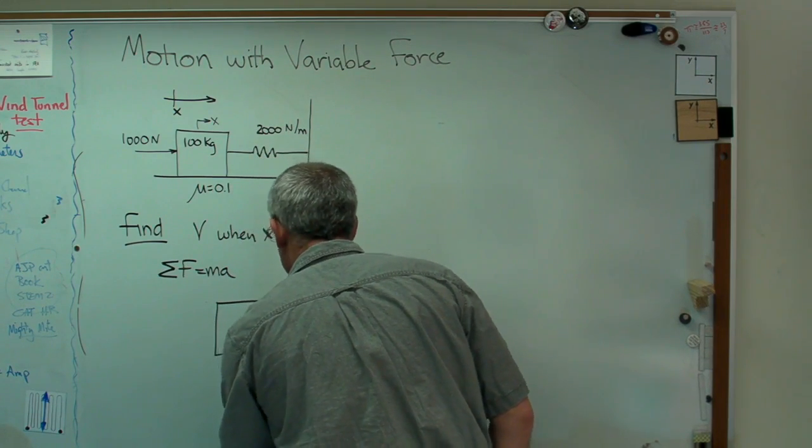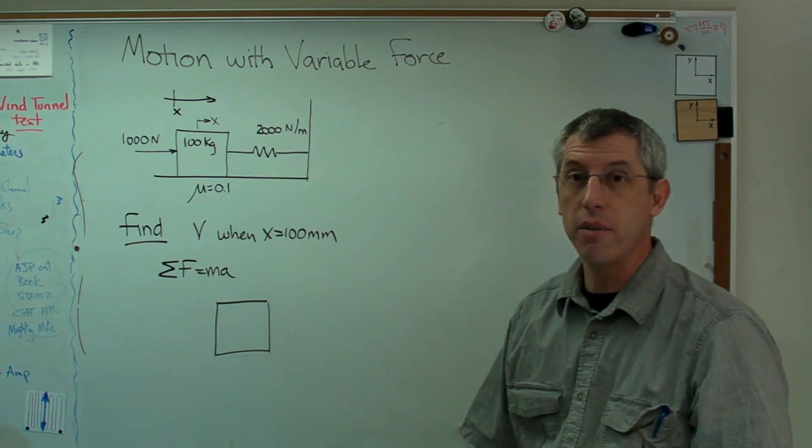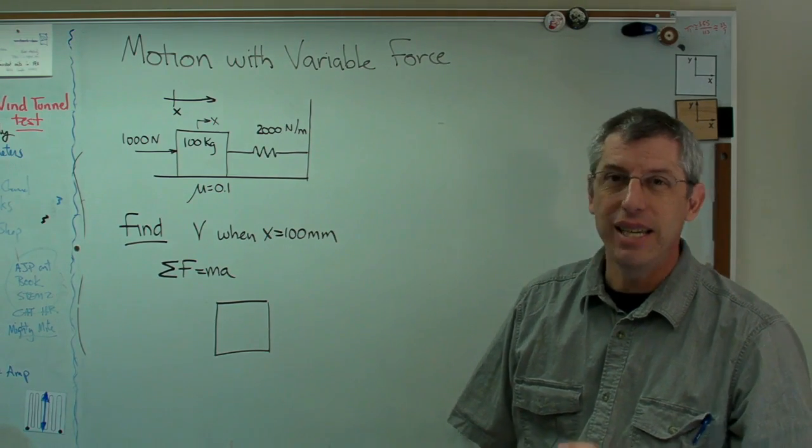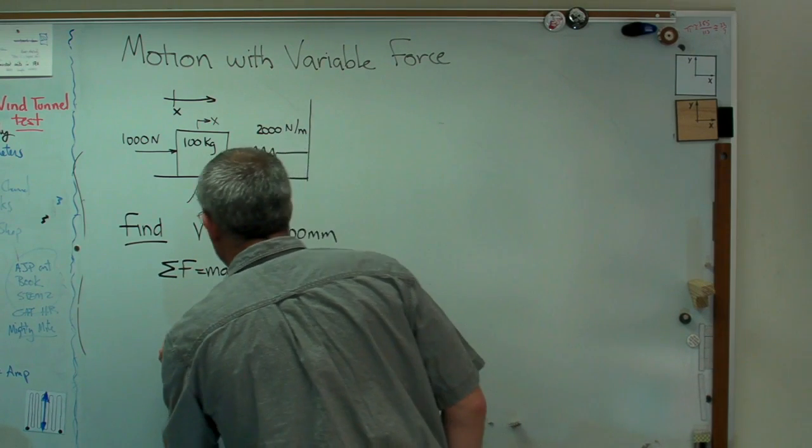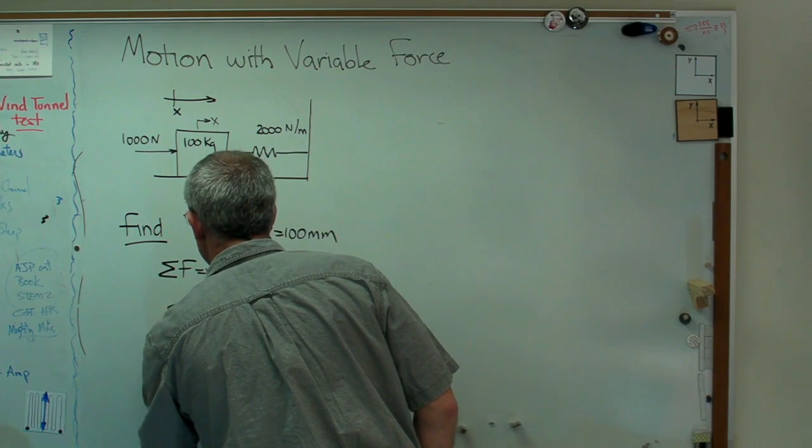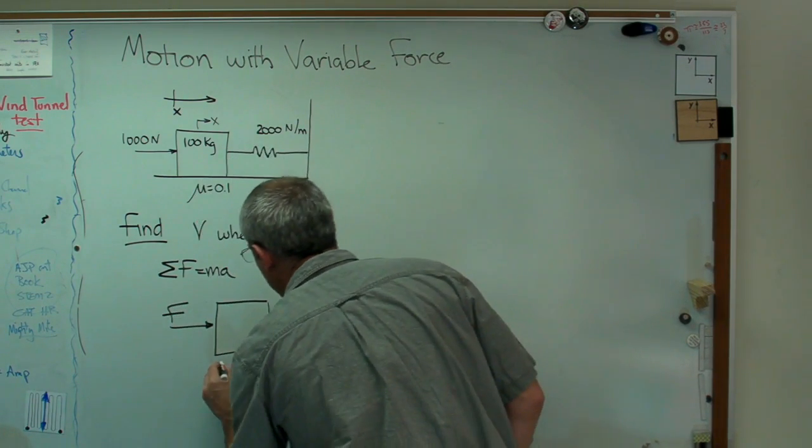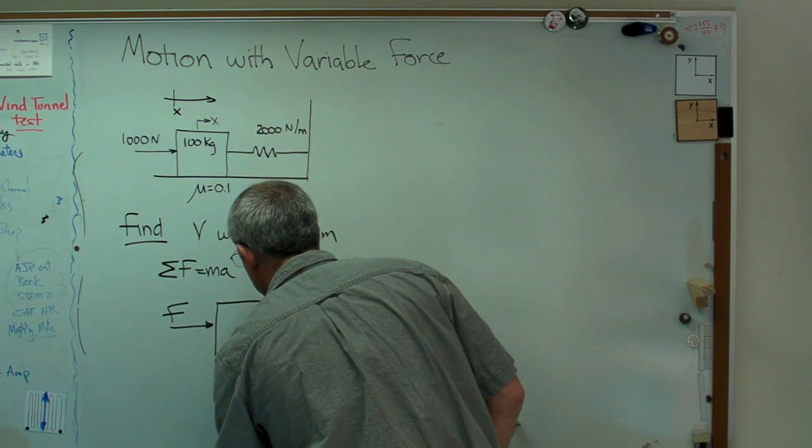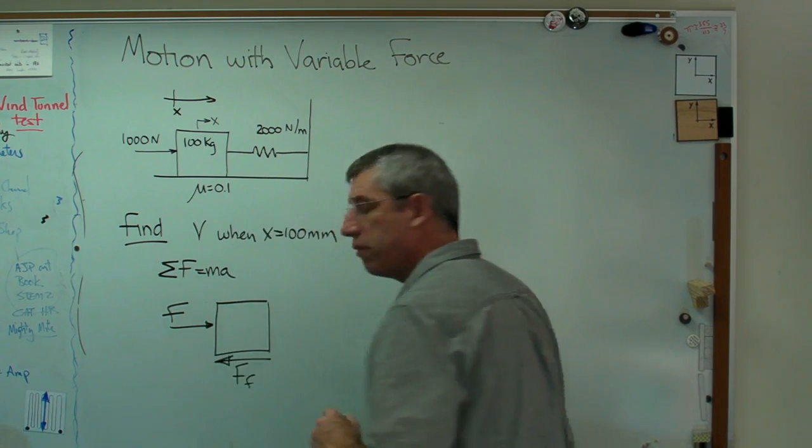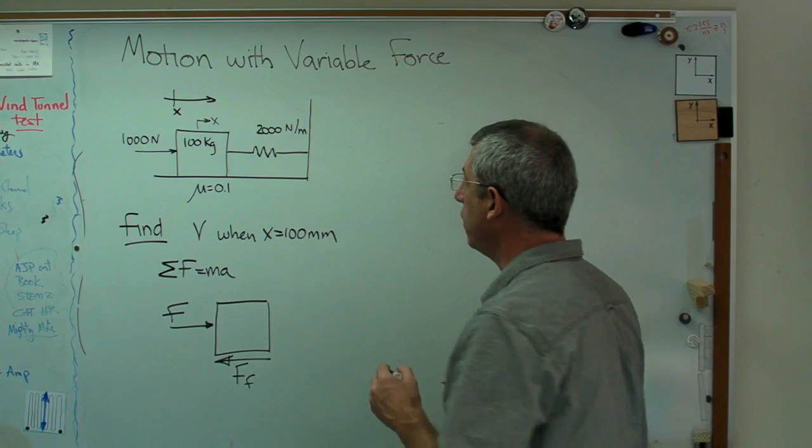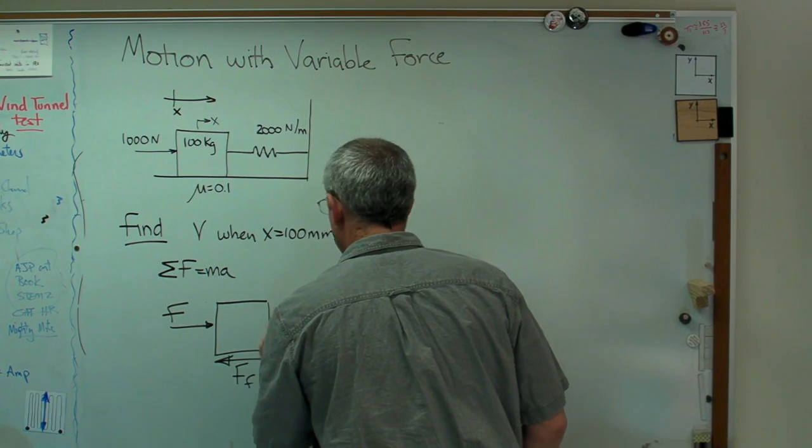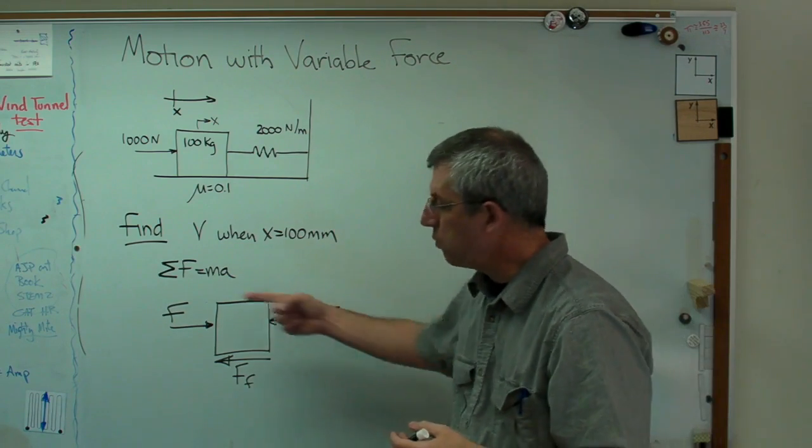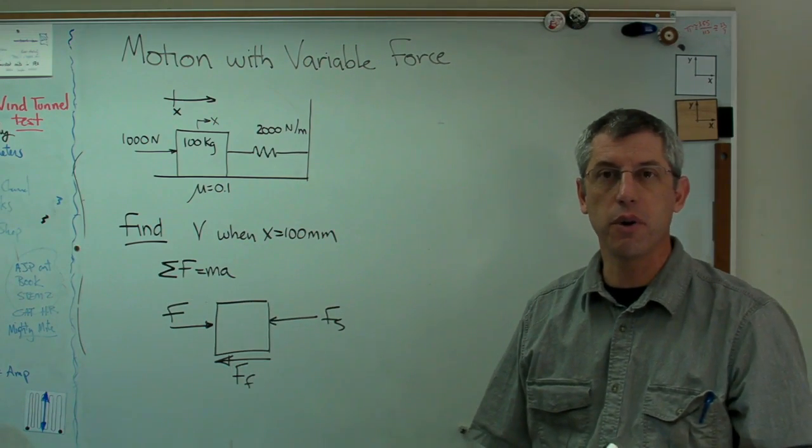When you're solving a problem, if you're not drawing a diagram, if you're not drawing a picture, that may be a mistake. So let's draw all the forces on this. We've got this static force, and I'll just call that F for right now. And I've got my friction force right there between the block and the ground. I've got a spring force going that way. Now, and I've got ma. Well, ma is actually going to point that way if we want to treat it as a force.